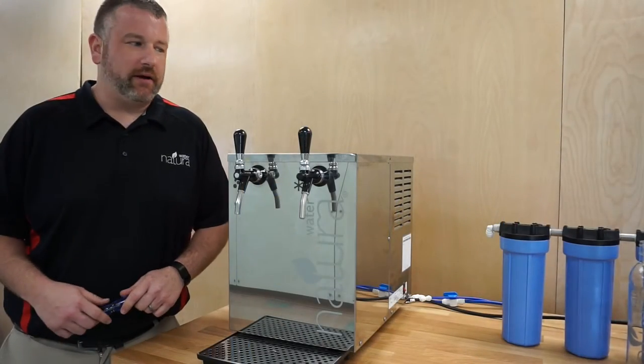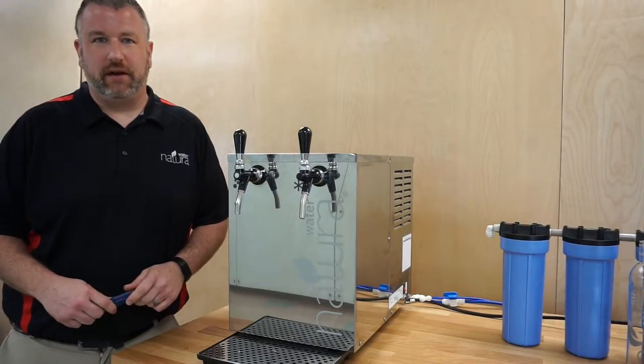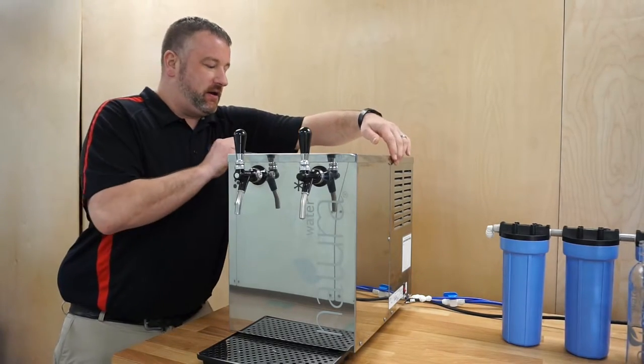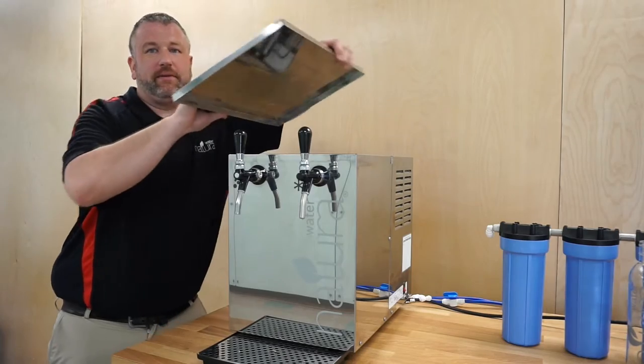Now that the taps are installed, you want to take the lid off the machine. To take the lid off, you want to use your T15 Torx screw. There's two screws on each side. You take it off, and the lid comes off.